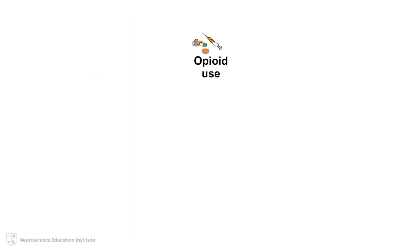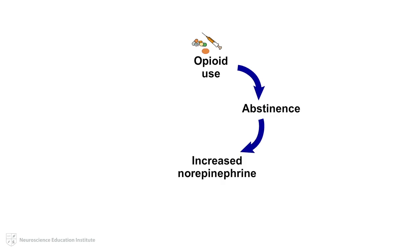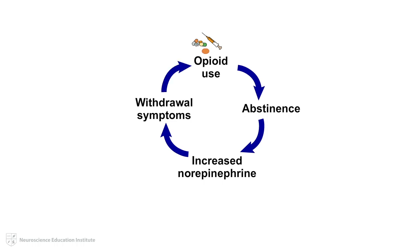When opioids are no longer present, as with the cessation of heroin use, there is over-activation of the norepinephrine system, resulting in symptoms of withdrawal. In the opioid addict, these withdrawal symptoms often lead to the individual seeking out additional opioids.